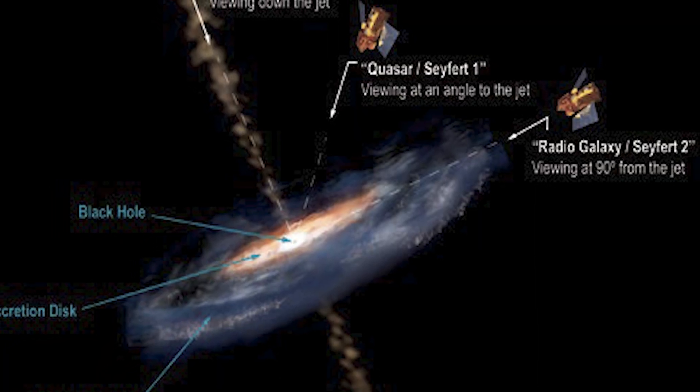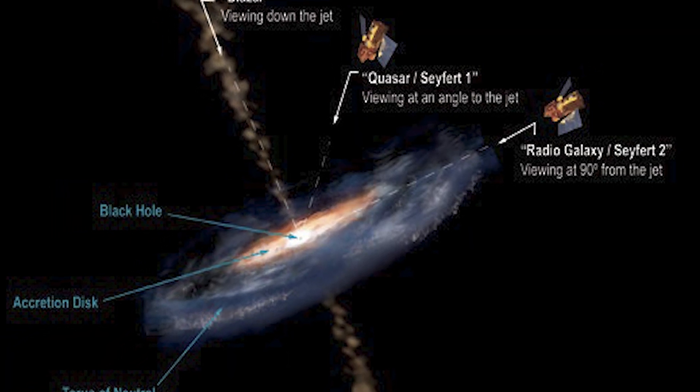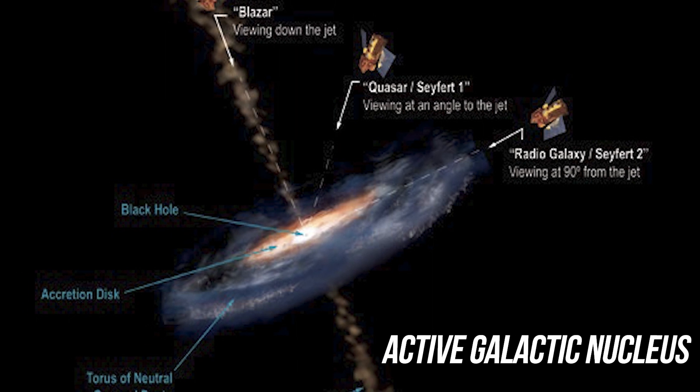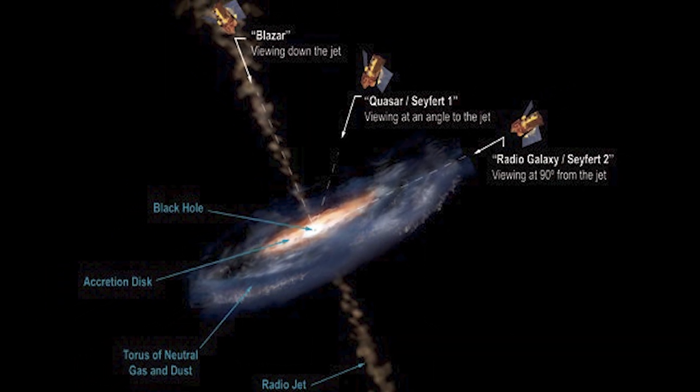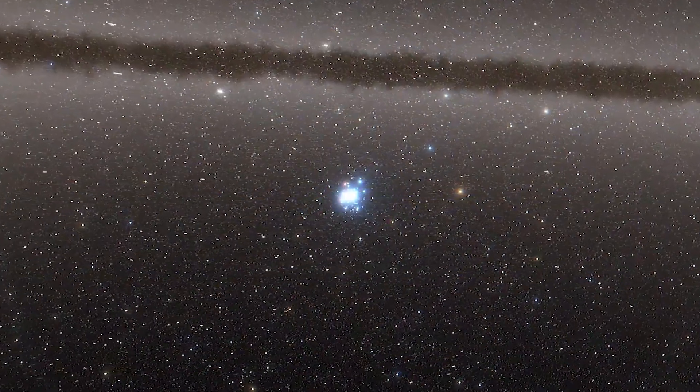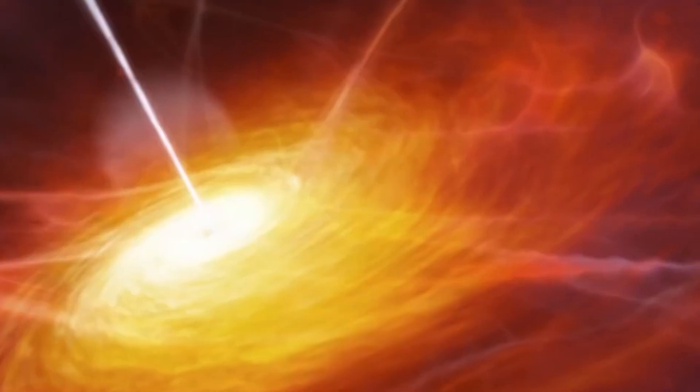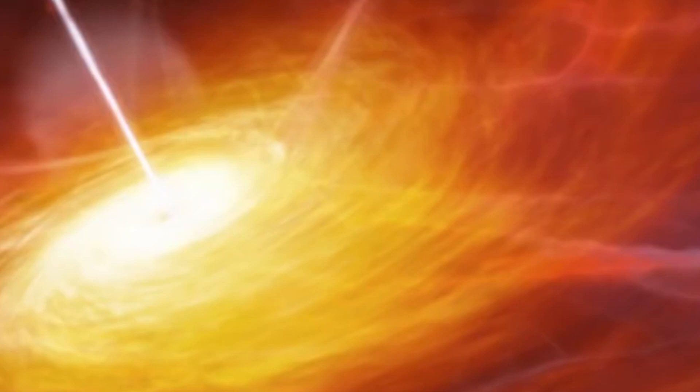Picture a galaxy in the distance with a dazzlingly bright, compact spot in the middle. This location is known as an active galactic nucleus, or AGN. It's like the shining heart of the galaxy, emitting all kinds of radiation across the electromagnetic spectrum.